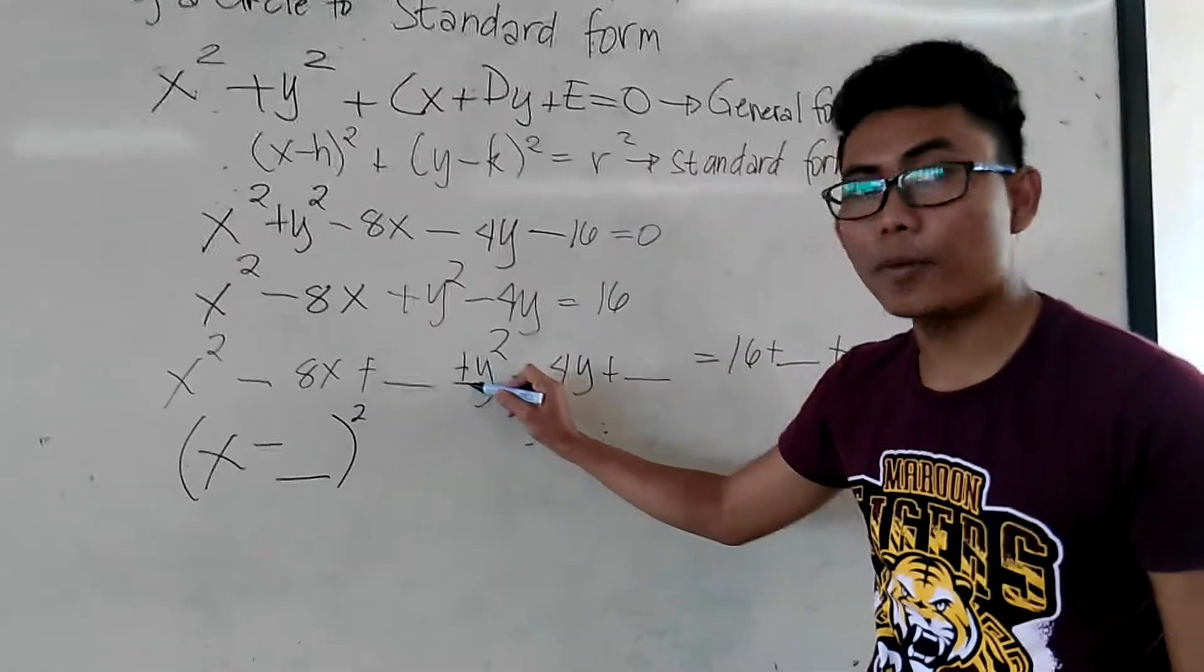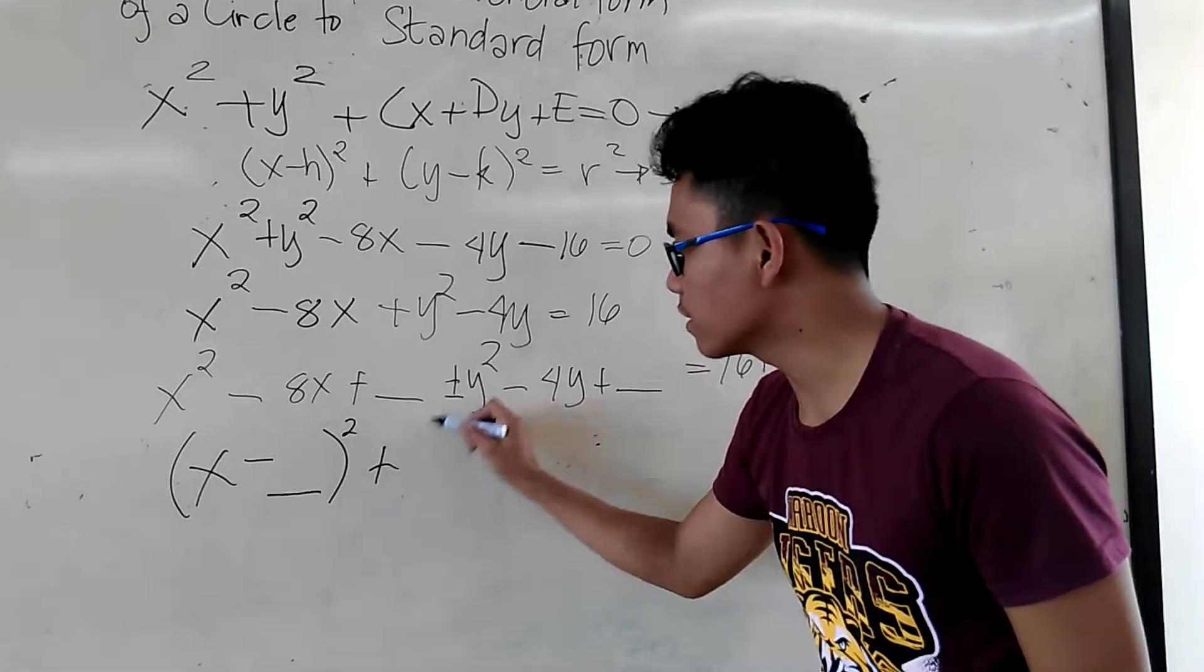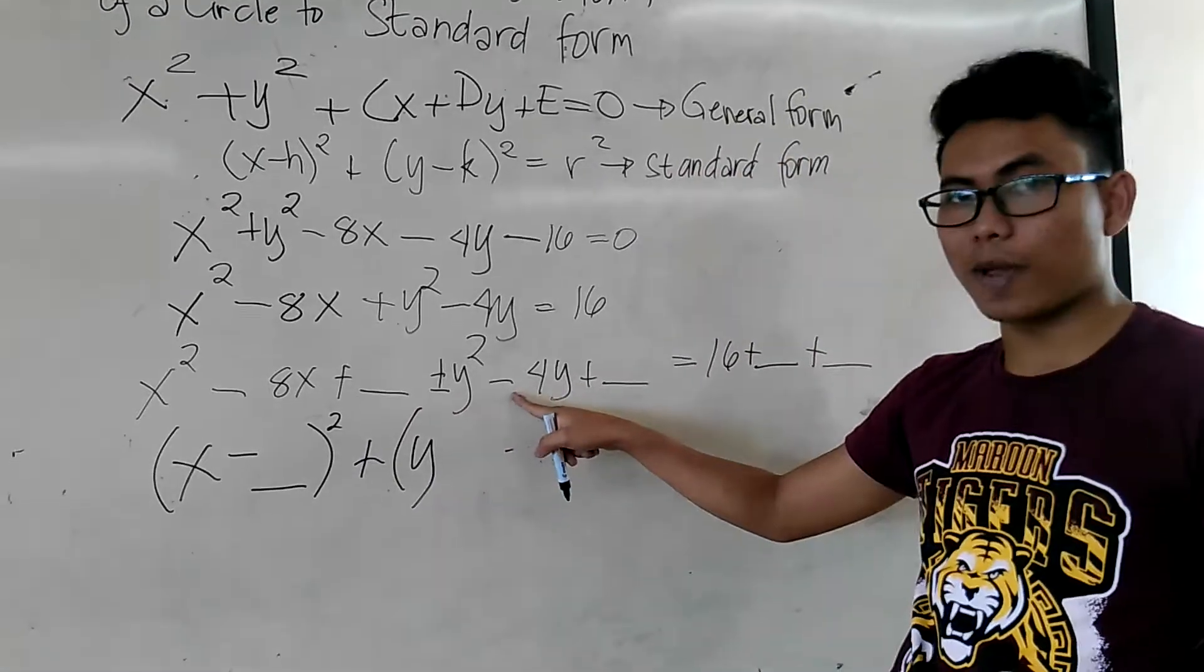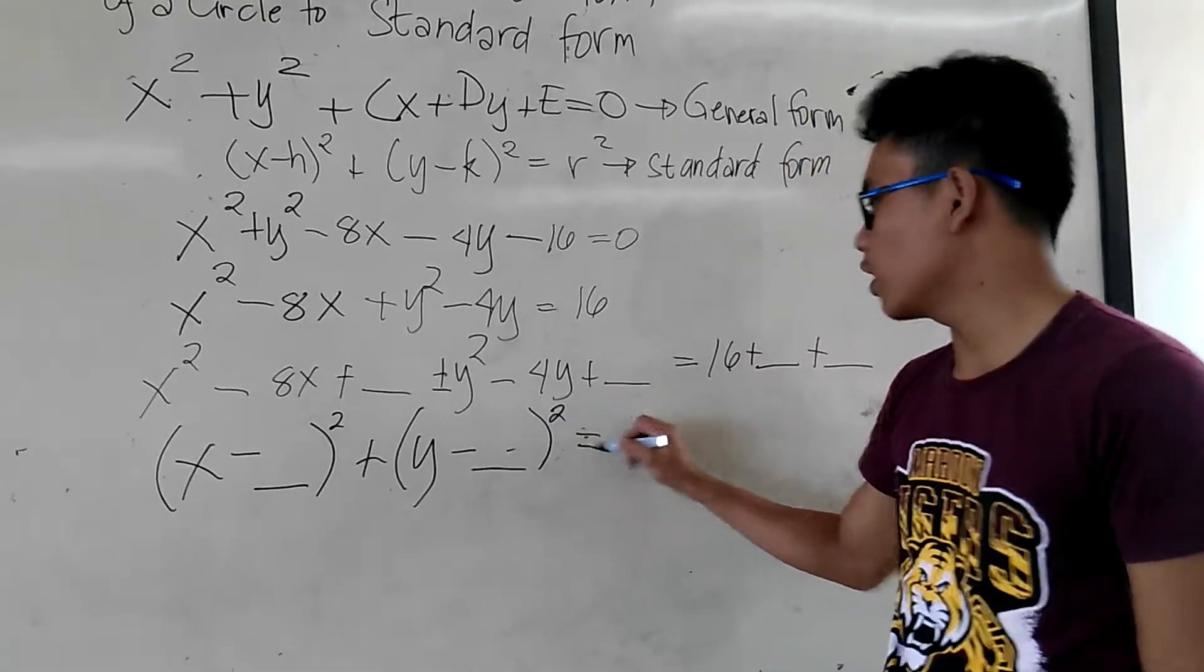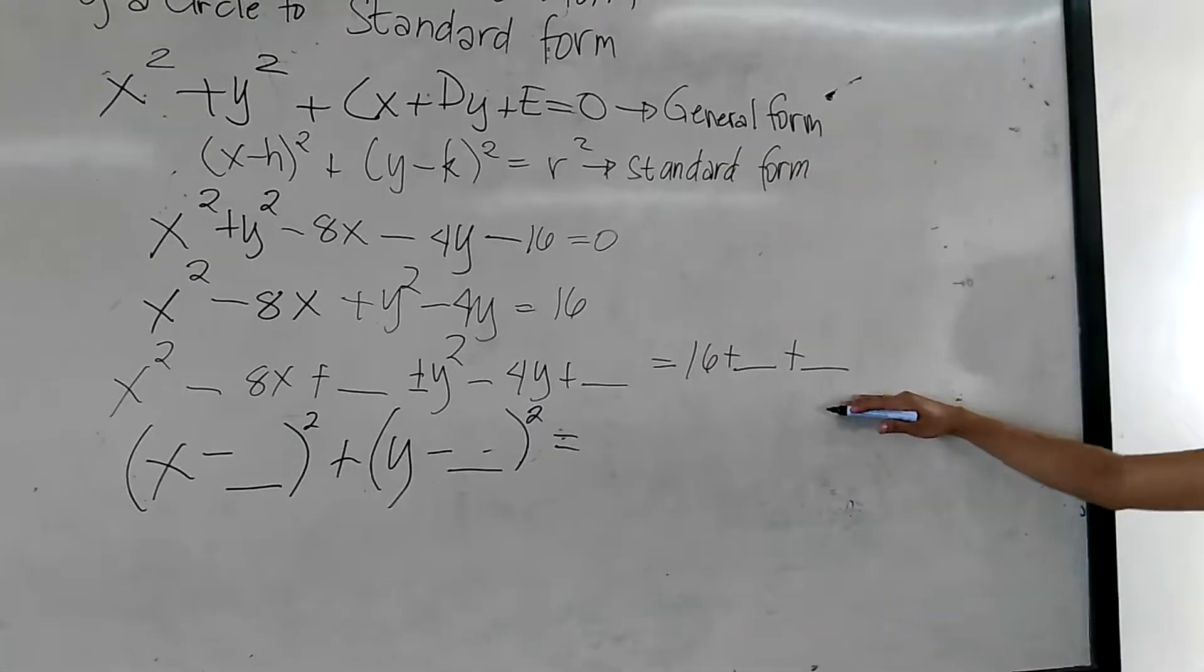Then, plus, remember, plus po yan. Plus. Why? Minus pa rin. Minus blank squared is equal to the answer to this one. Okay?